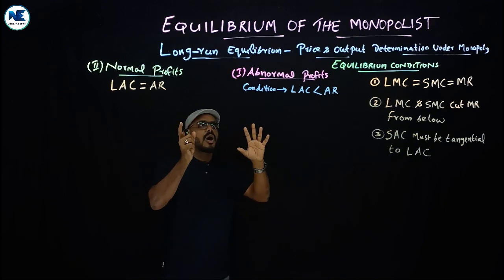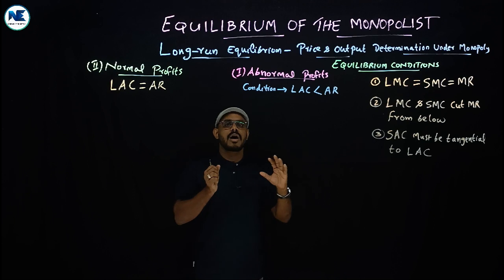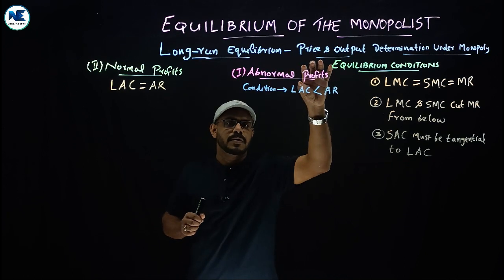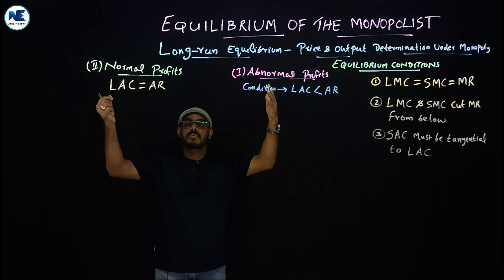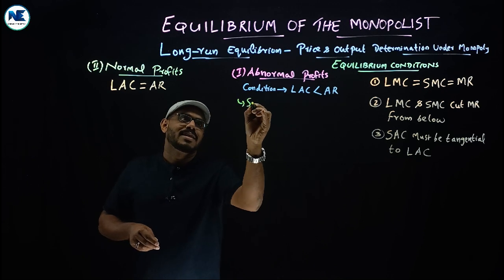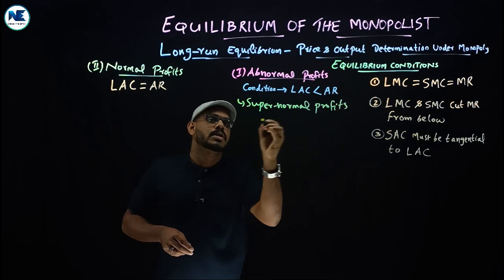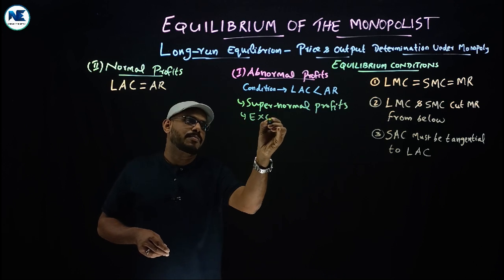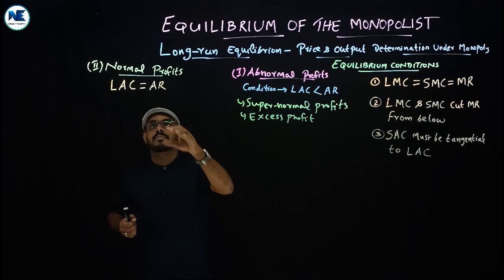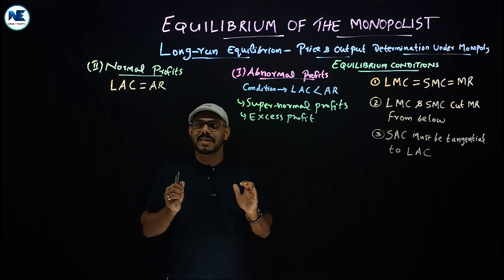In the long-run equilibrium of the monopolist, we can see there are two possibilities. First, the firm can earn supernormal profit — also called abnormal profit or excess profit. The second possibility is that the firm earns normal profit. Importantly, there is no chance of losses in the long run.